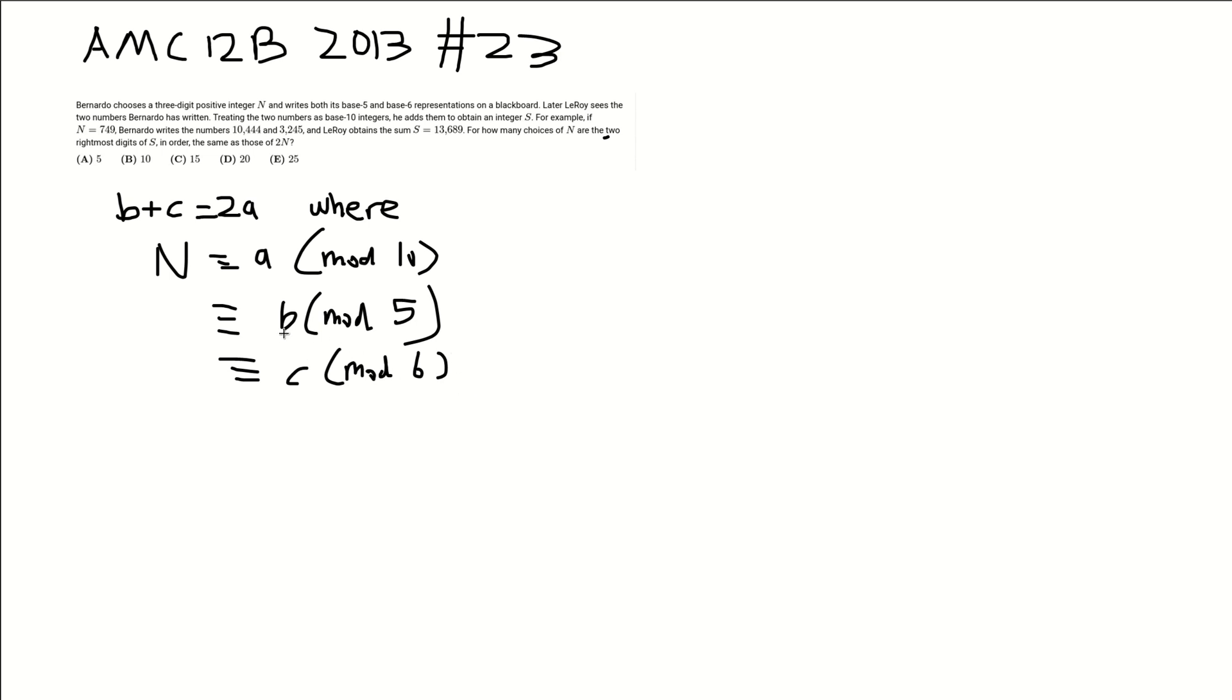Now note that b is at most 4 and c is at most 5. So b plus c is at most 9, which means that a is at most 4. So a can at most be 0, 1, 2, 3, or 4. Let's write that down here. A is at most 4.